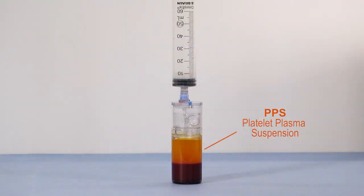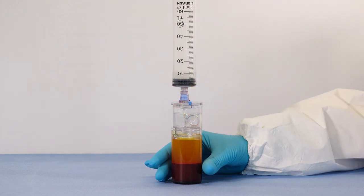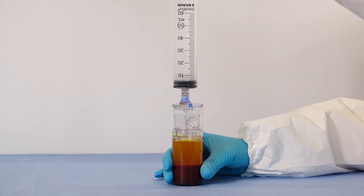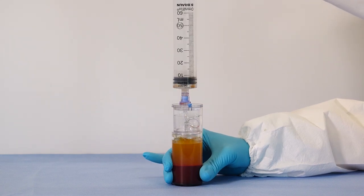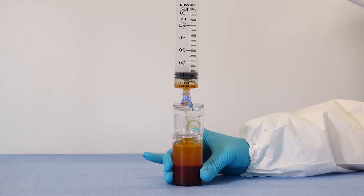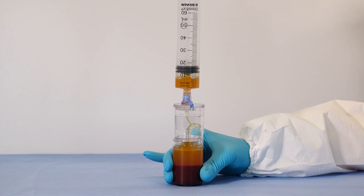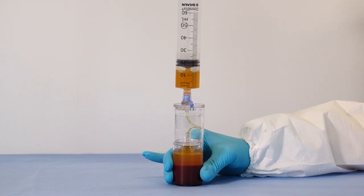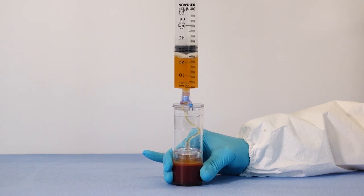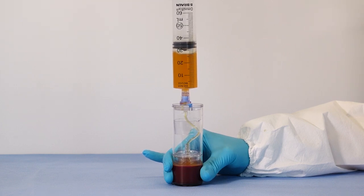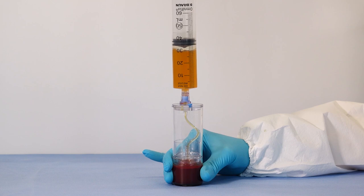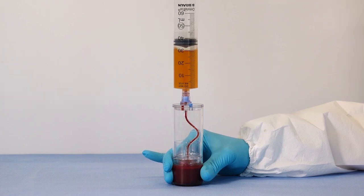After centrifugation, the platelet plasma suspension, or PPS, will be separated above the red blood cell layer. Attach a sterile syringe to the top port and aspirate the platelet plasma suspension. Aspirate until red blood cells fill the aspirating pipe.